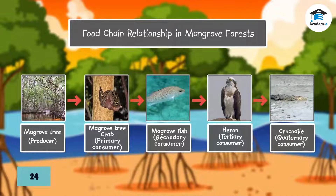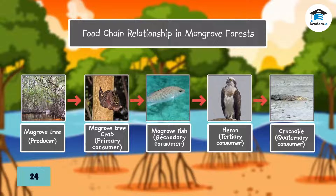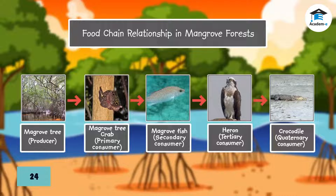One food chain in mangroves starts with the mangrove plant. The mangrove tree crab is an omnivore but most often feeds on mangrove leaves. Many types of mangrove fish prey on mangrove tree crabs, eating those that accidentally fall into the water. Birds like osprey and heron hunt for fish in mangroves. And if a hungry crocodile is nearby, the bird may end up as a meal for the crocodile.